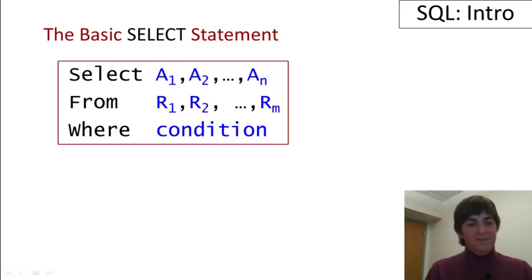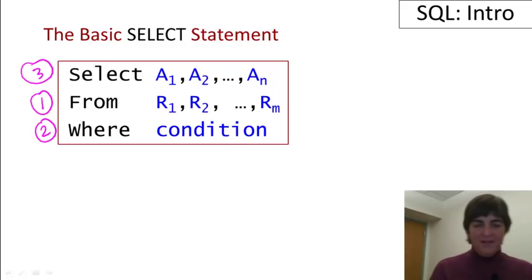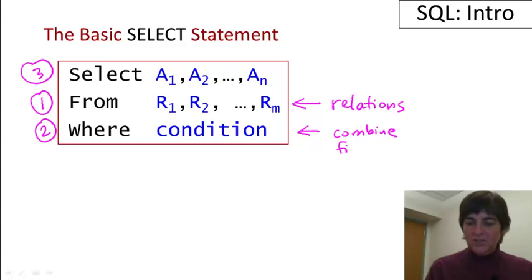The best order to think of these is first the from clause, then the where, and then the select. The basic idea is that the from identifies the relations that you want to query over. The condition is used to combine the relations and to filter the relations. Finally, the select tells you what to return.